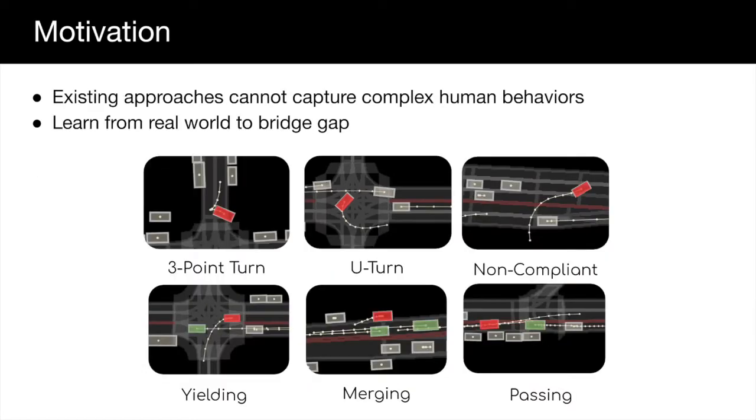Existing simulation environments directly encode traffic rules, and thus cannot capture complex driving behavior in the real world such as U-turns and merging. We propose instead to learn from human demonstration to bridge this gap.